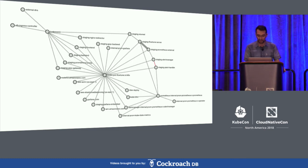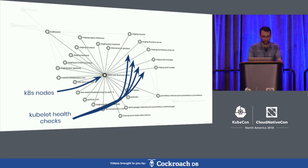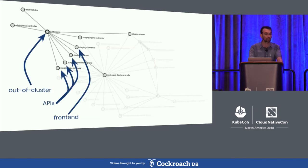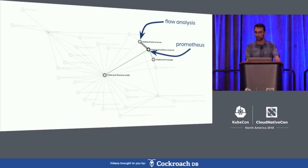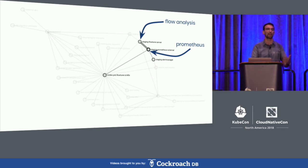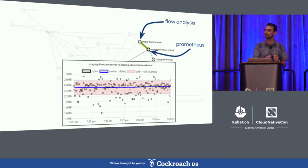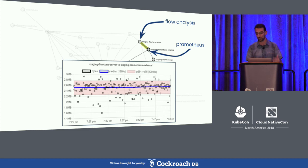Let me give you a tour of one of our staging environments. Here you can see the Kubernetes nodes and some of the health checks that Kubelet performs to containers in the cluster. Here you can see out-of-cluster traffic hitting our APIs and our front end. And here you can see the flow analysis server and Prometheus scraping it. I mentioned collecting throughput, packet drops, and round-trip time. By analyzing the time series data, it's possible to establish baselines of what the behavior should look like, so the system could alert you on changes and anomalies.